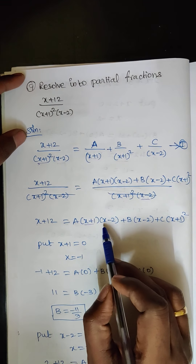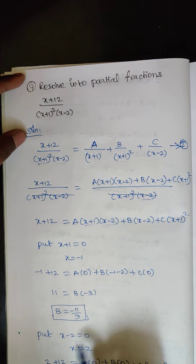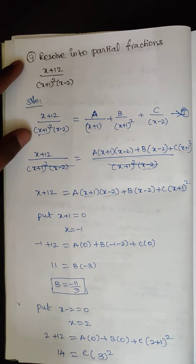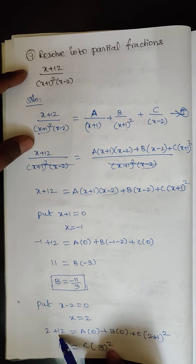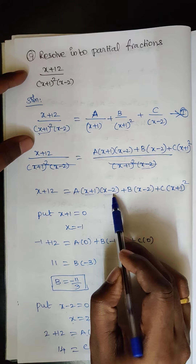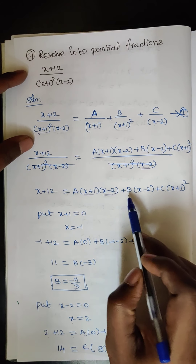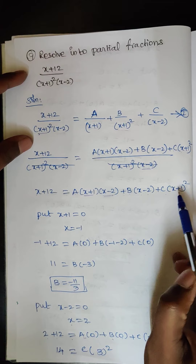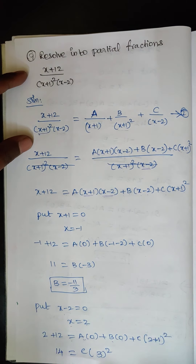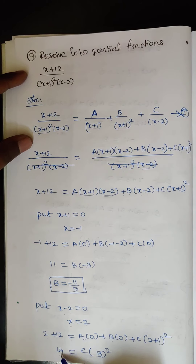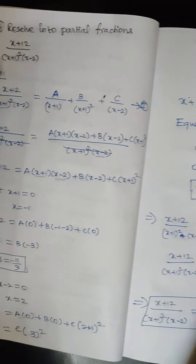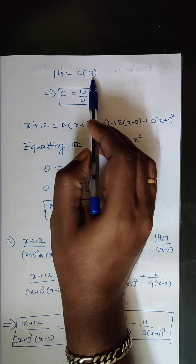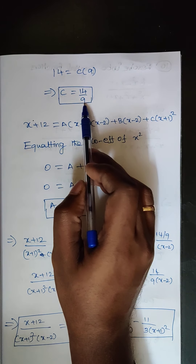Now put x − 2 = 0, so x = 2, and substitute here. So 2 + 12 equals A·0 plus B·0 plus C·(2 + 1)². That gives 14 = C·9, so C = 14/9.